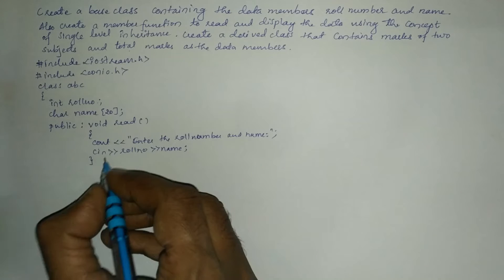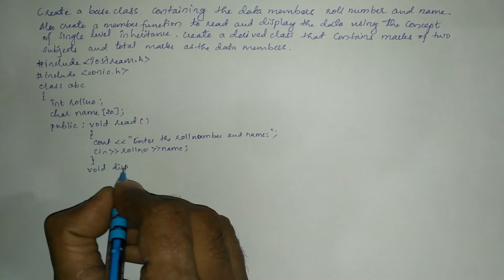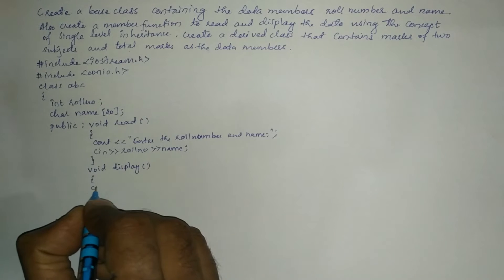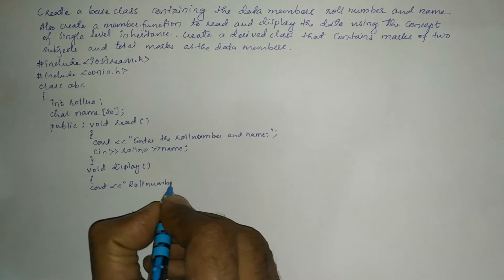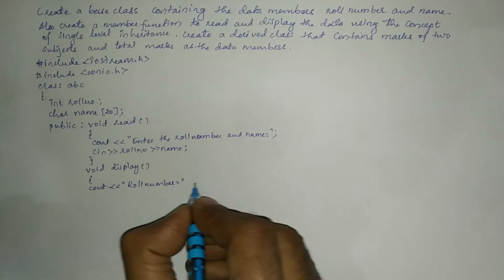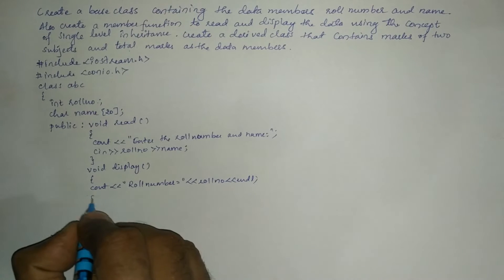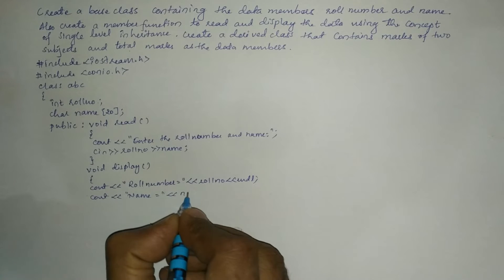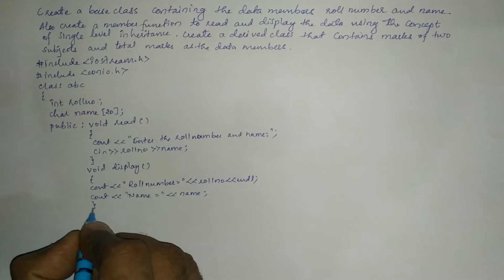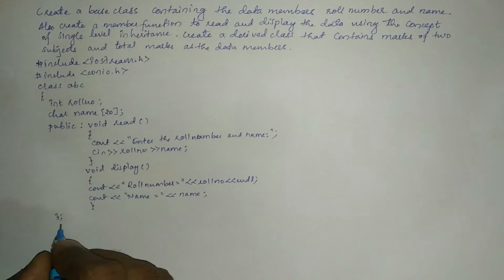Whatever we have entered has to be displayed. For that I am going to define one more user defined function called void display, using cout stream insertion operator to print the role number variable and then the name of the student. Then curly closing brace and curly closing brace for this class definition, followed by a semicolon that indicates it is the termination point of the class definition.